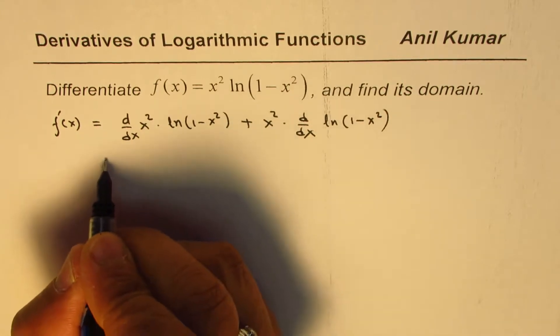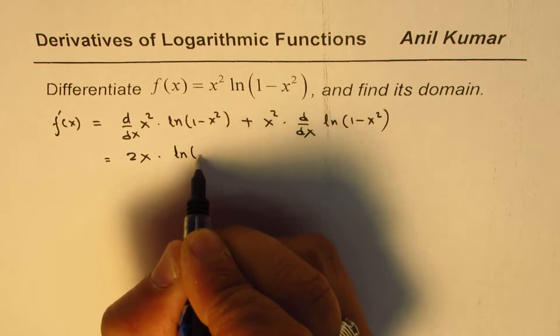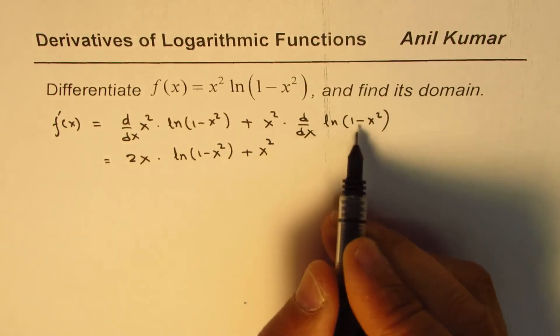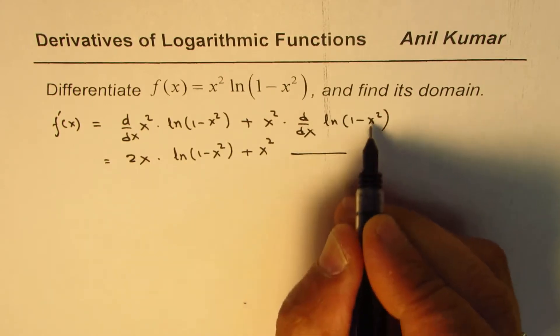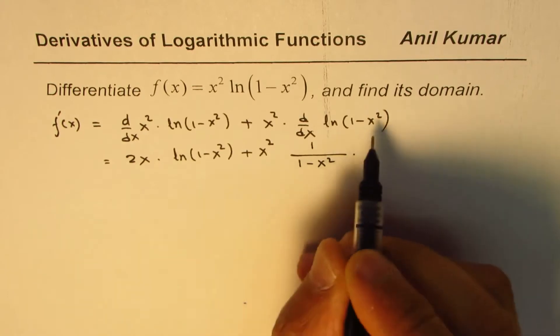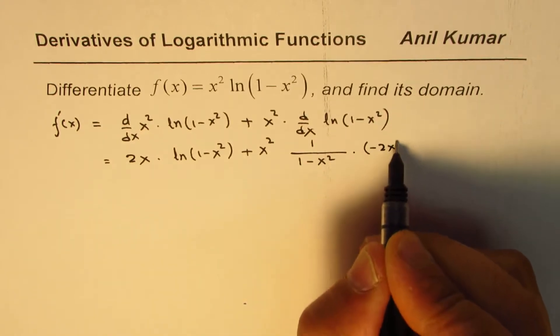Now derivative of x squared, as you know, is 2x. So we get 2x times ln 1 minus x squared plus x squared times derivative of ln will be 1 over the function, which is 1 over 1 minus x squared times derivative of inside function, which in this case will be minus 2x.